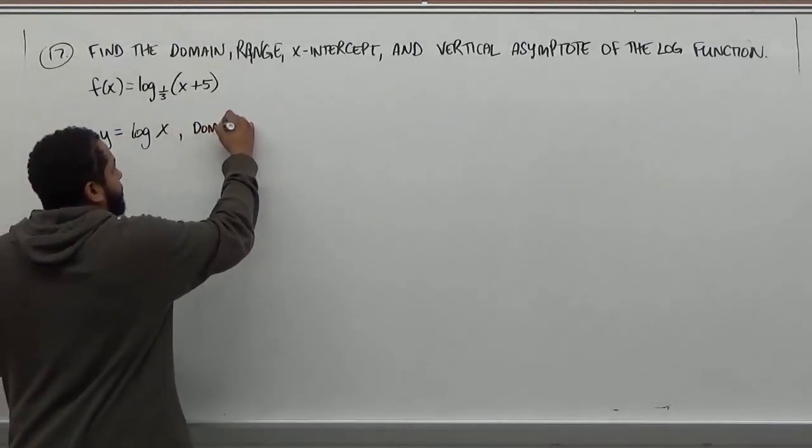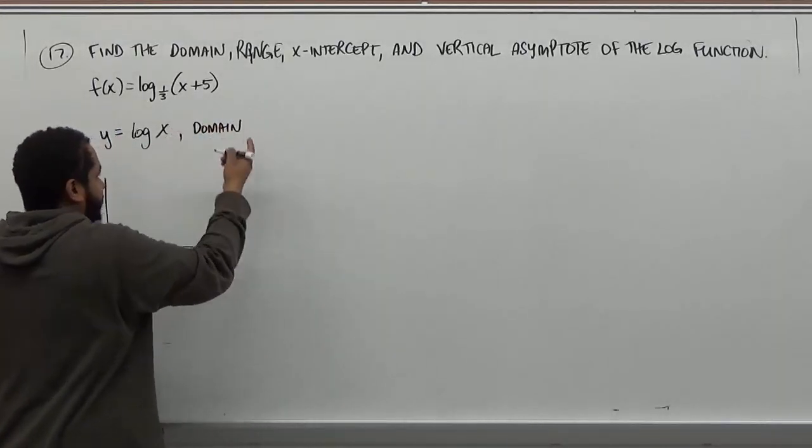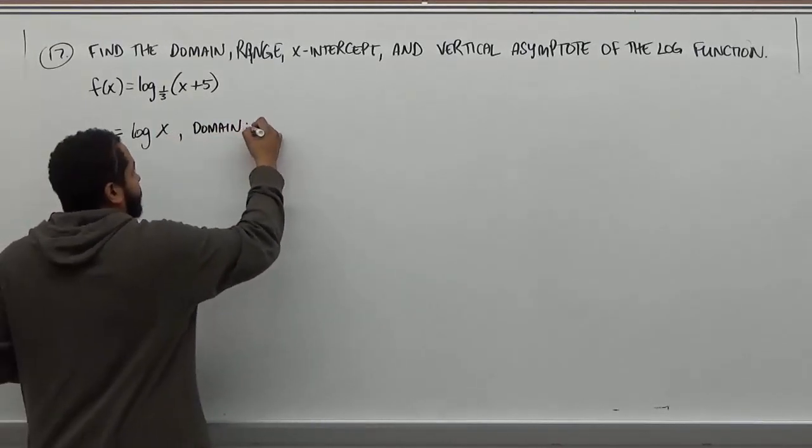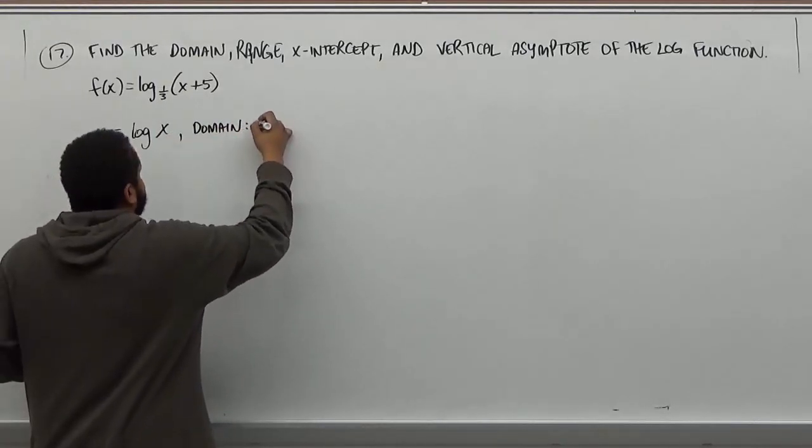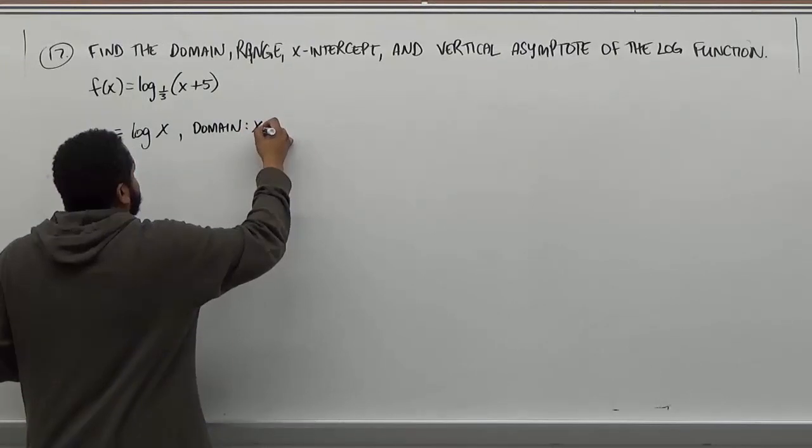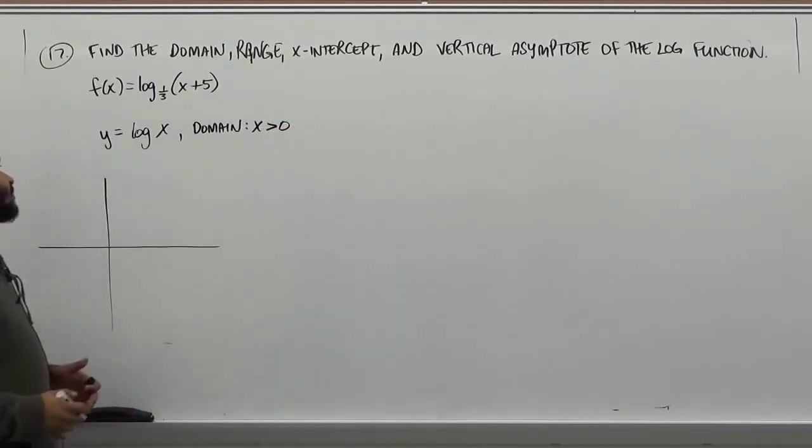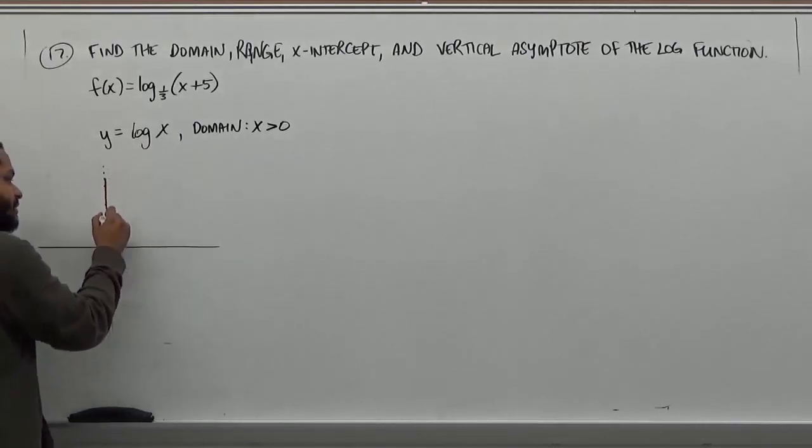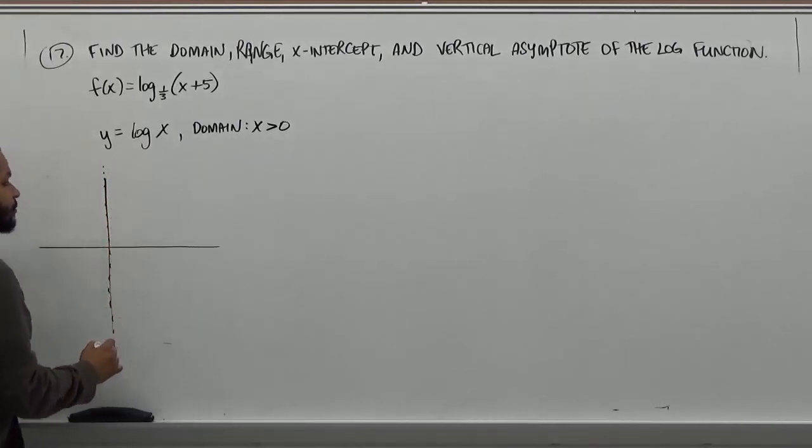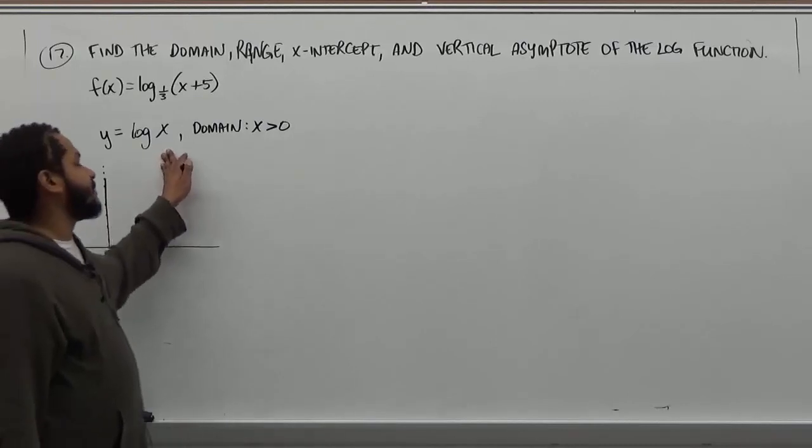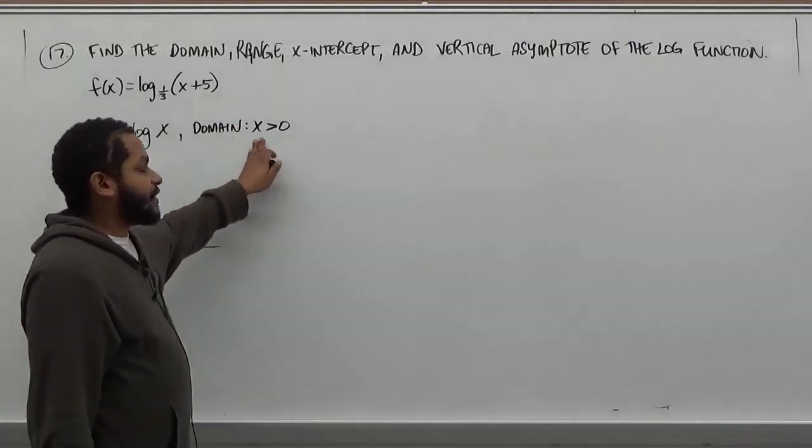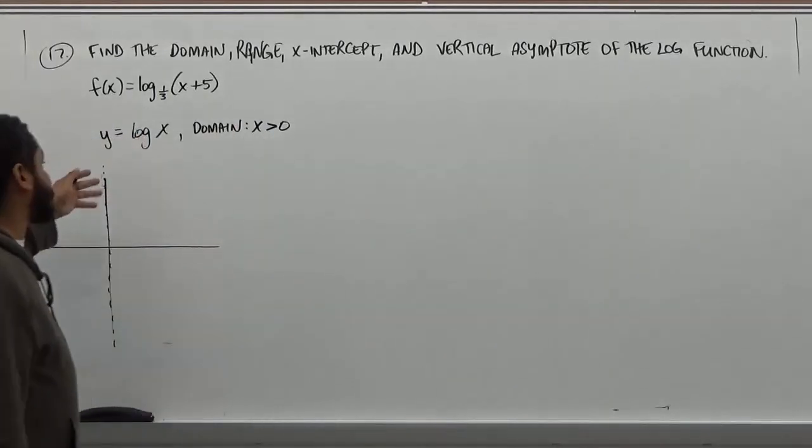So the domain says, if you have some term like just x, the domain of this function then is going to be x is greater than zero. It cannot be equal to zero, because what happens is there's a vertical asymptote right down this line of zero. So whenever we see we have a function inside of this, that function must be greater than zero. This gives us our domain.